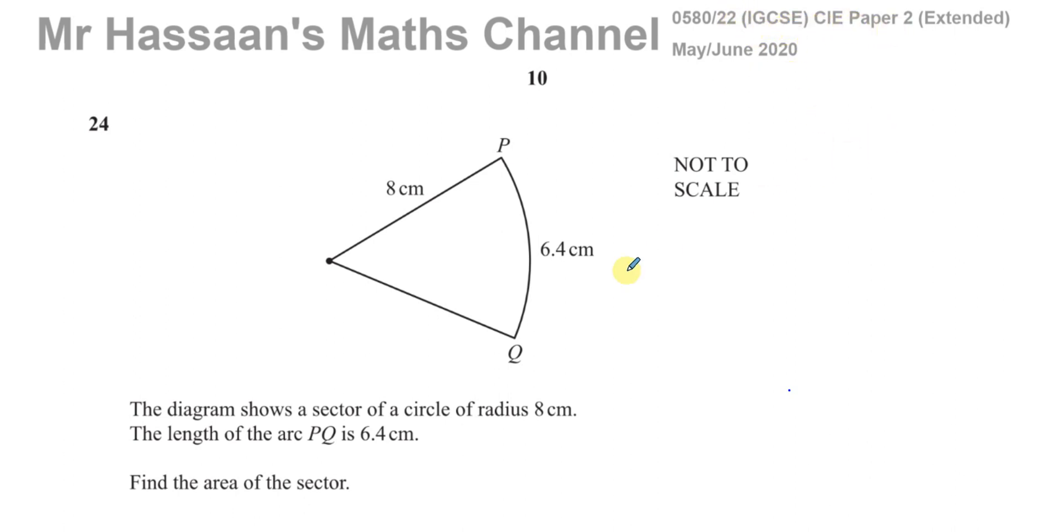And this question here is about this sector. It says the diagram shows a sector of a circle of radius 8 cm. The length of the arc PQ is 6.4 cm.